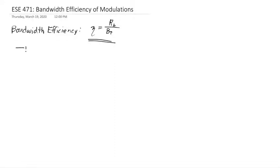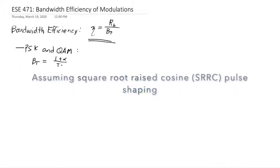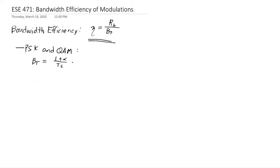So let's first look at PSK and QAM. They both have the same formula for BT. It is that BT is equal to 1 plus alpha divided by the symbol rate. And the symbol rate itself is a multiple of the bitrate. It's log base 2 of m times Tb.